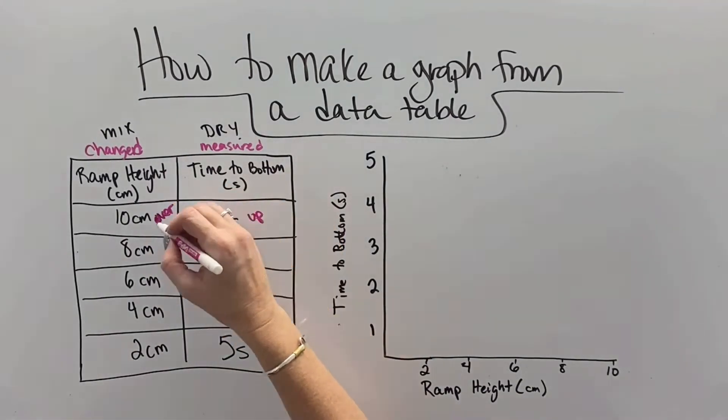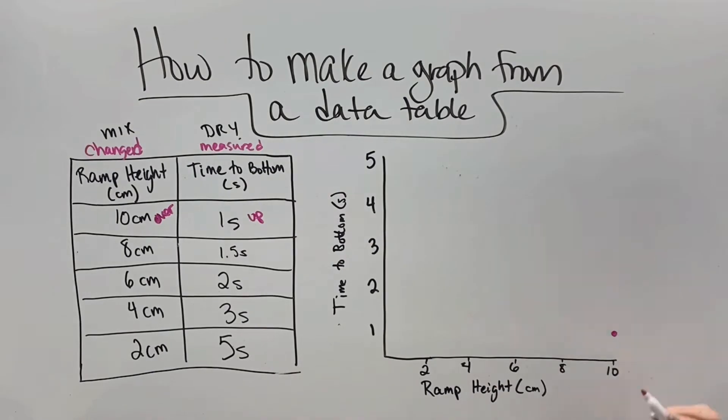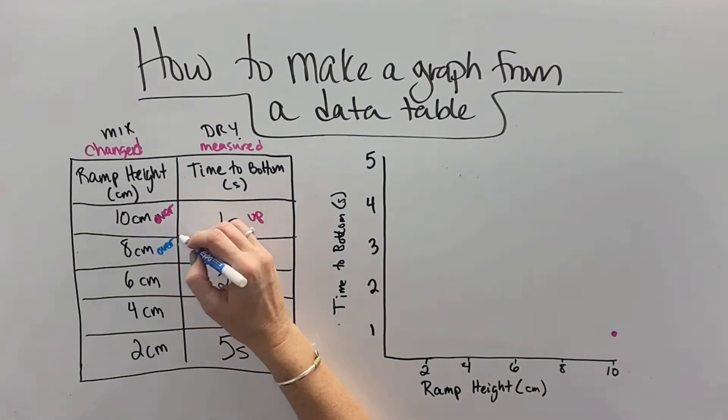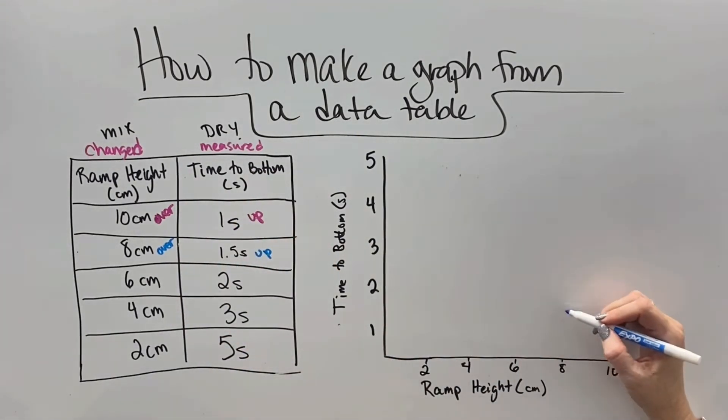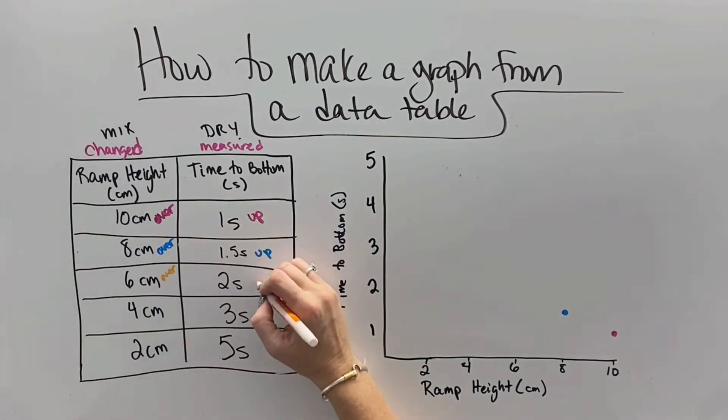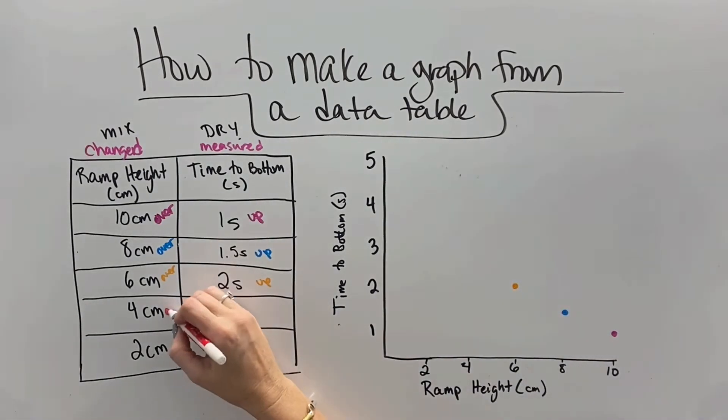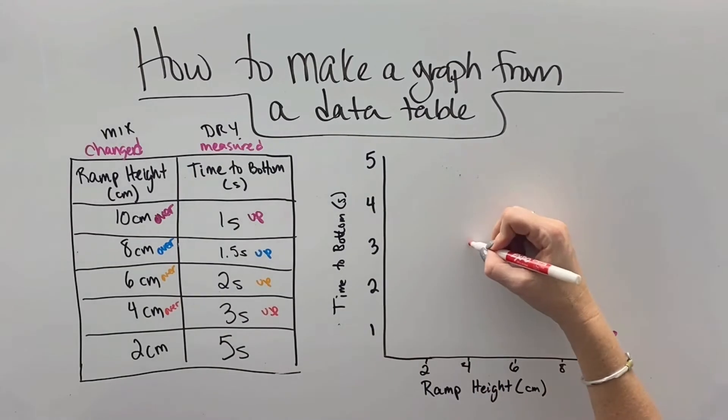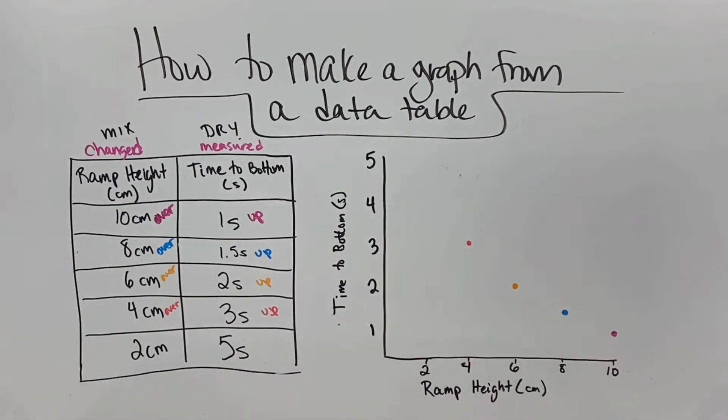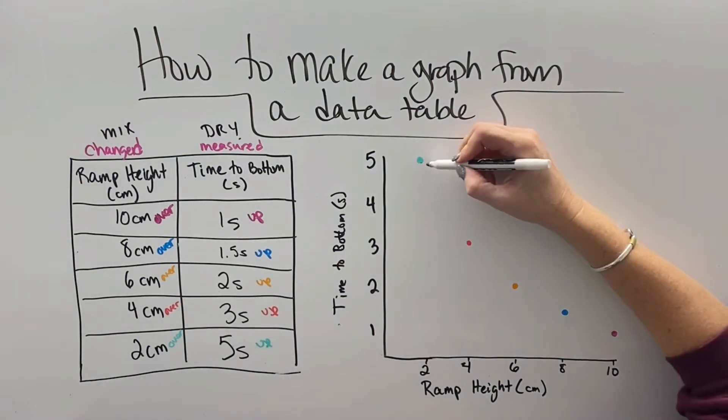And then the highest time that we had at the bottom was five, so we put that at the top and then break it down. Then all we got to do is look at our data points and figure out how to make our dots. And so we go over by the ramp height and up by the time to the bottom and draw a dot. And then over by the ramp height, so in this case four, and up to the three, which is a time to the bottom and draw a dot. And then over two centimeters, up five seconds and draw a dot.